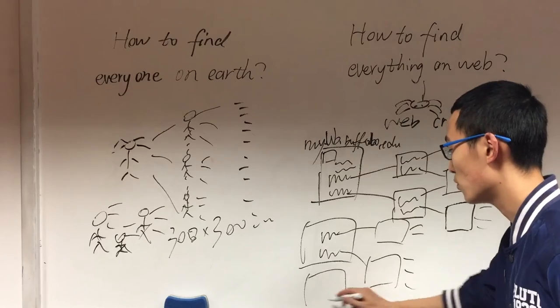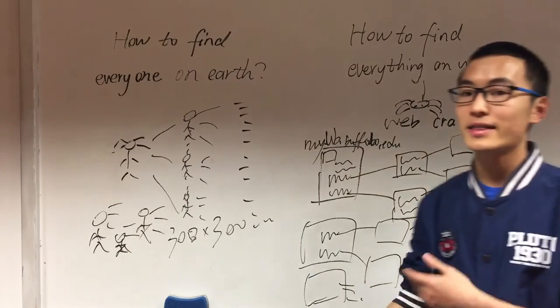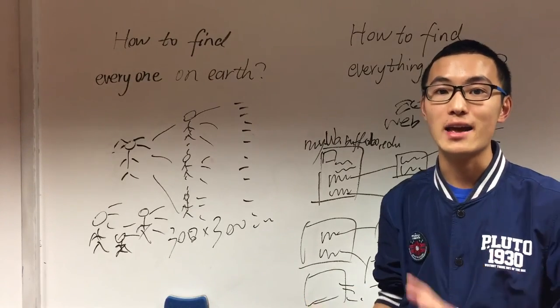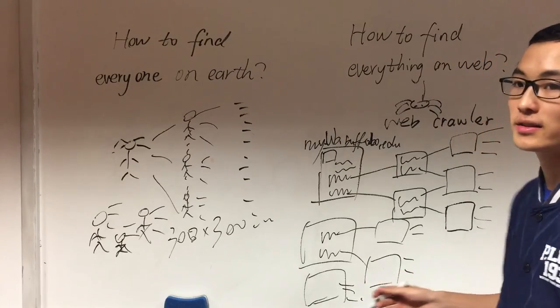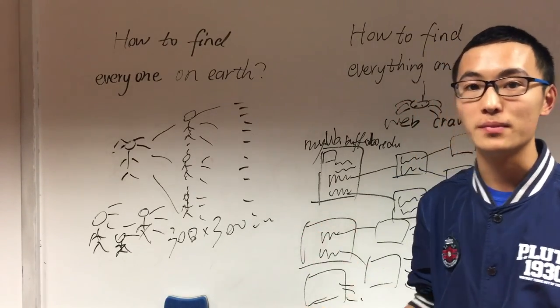And maybe some more pages. Do that over again. In this way, it is more possible for us to find every page on the web. So that's pretty much the general idea of how we find everything on the web.